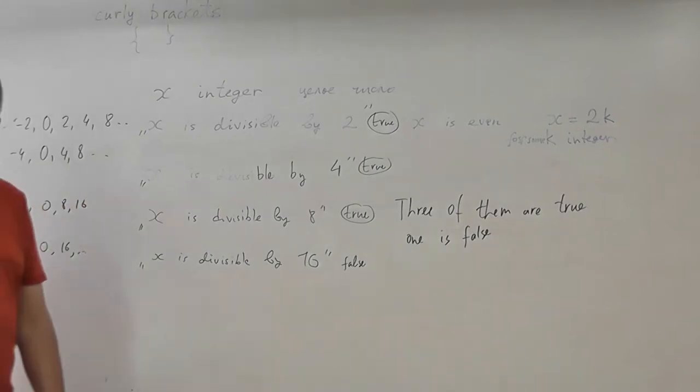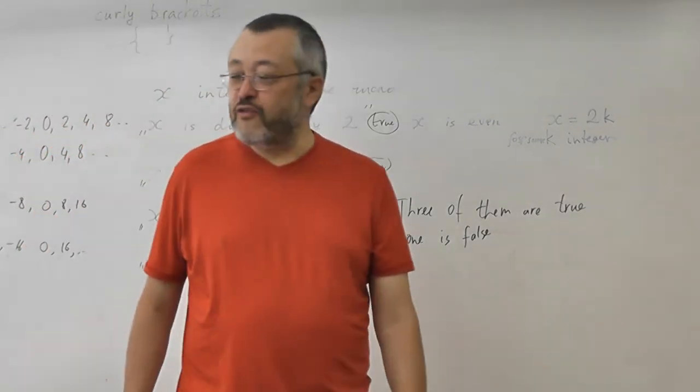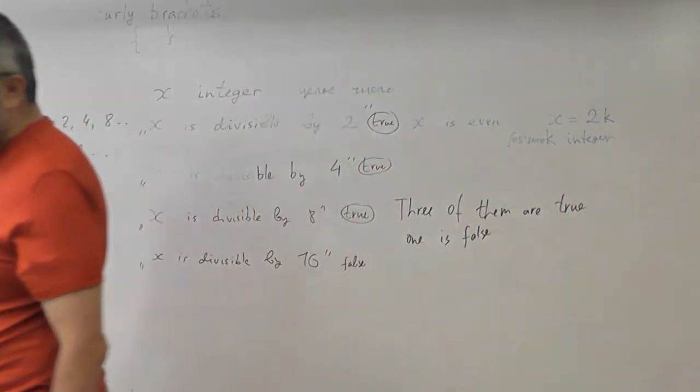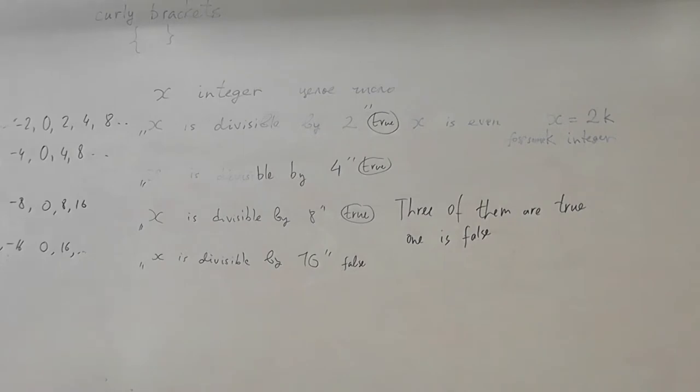And can you give another example of x, for which only the last statement is false? Besides eight, do you know? What will be the next number which is divisible by eight but not divisible by sixteen? Divisible by eight, by four, by two, but not divisible by sixteen?